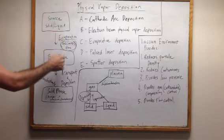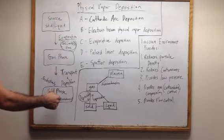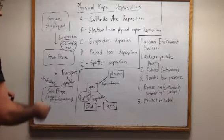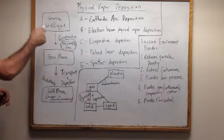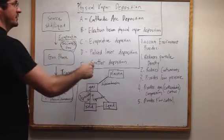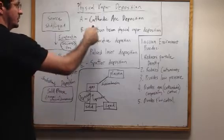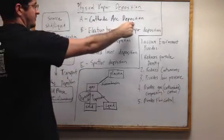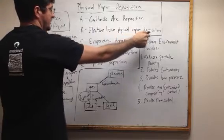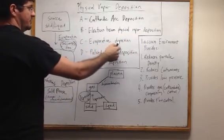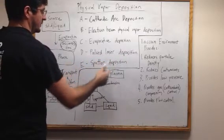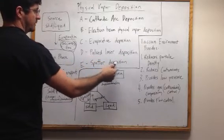The substrate takes it back to a solid phase with changes in physical characteristics. So: source, vaporized, put back into solid form again. This is a very common process in industry. You have different types of physical vapor deposition: cathodic arc deposition, electron beam physical vapor deposition, evaporative deposition, pulsed laser deposition, and sputter deposition.